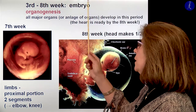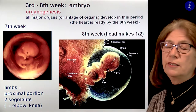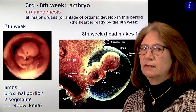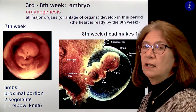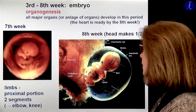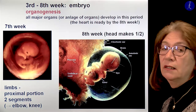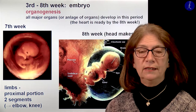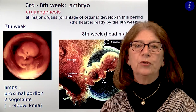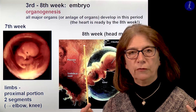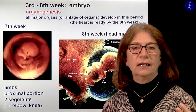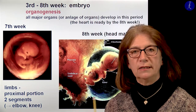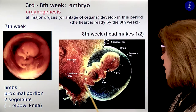From the third to the eighth week we call this developing creature the embryo, and this is the period of organogenesis. In this period all major organs develop, or the anlage for the organs is established. Some organs are already ready, like the heart — because always that develops first which is most needed. On the third week, development of the nervous system begins. On the fourth week, the neural tube will close. And at the beginning of the fourth week, the heart is already pumping blood because it's needed for optimal nutrition of the embryo.